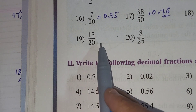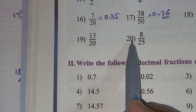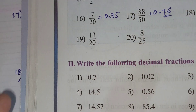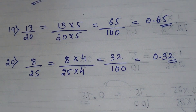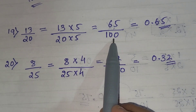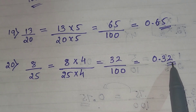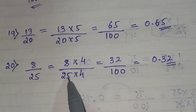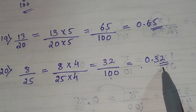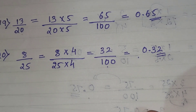For examples 19 and 20, please pause the video, try to solve them yourself, then check your answer with mine. Here are the answers: 13 by 20 equals 0.65 — we multiplied by 5 to get 100. And 8 by 25 equals 0.32 — we multiplied both by 4 to get 100, giving 32 by 100, which is 0.32.